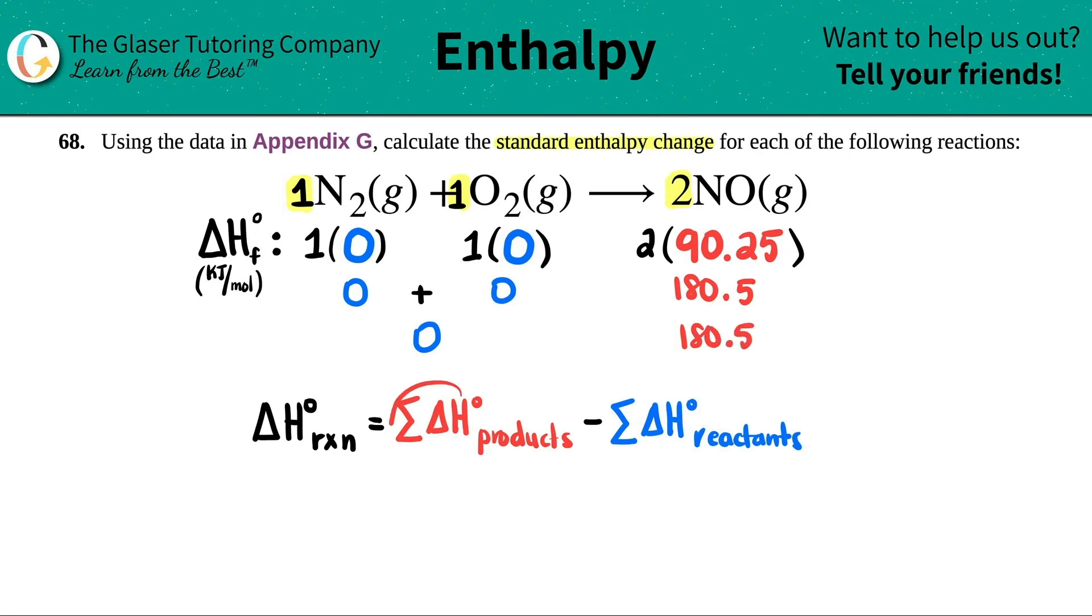And now all we have to do is just throw in those two numbers in here. So the delta H for the reaction is products 180.5 minus zero. So in this case, the delta H would just be 180.5. And that's it.